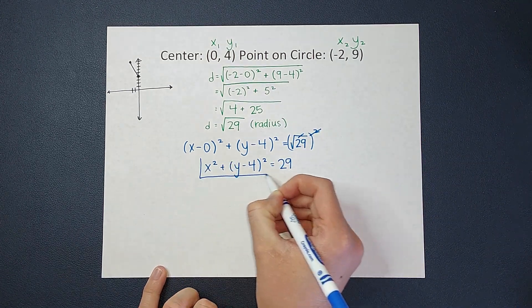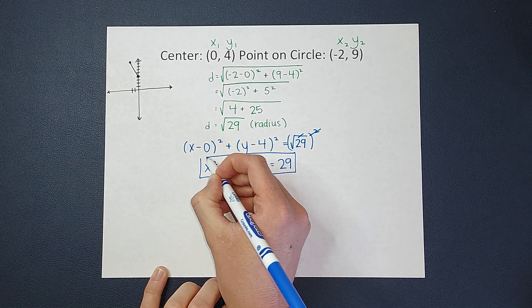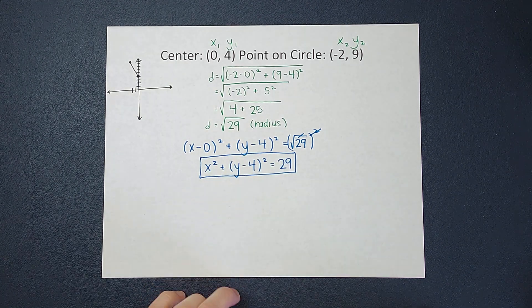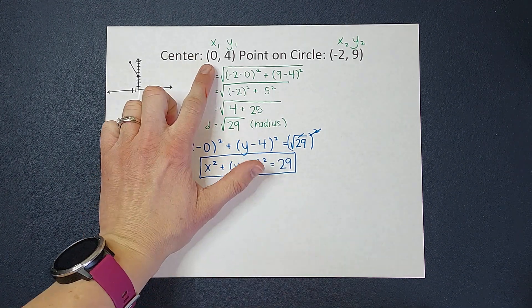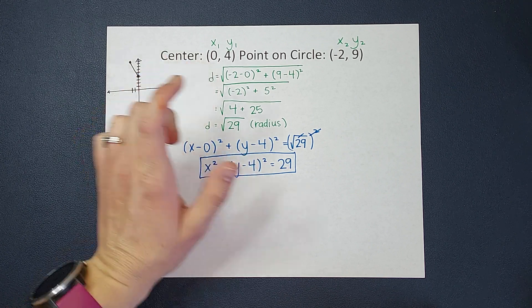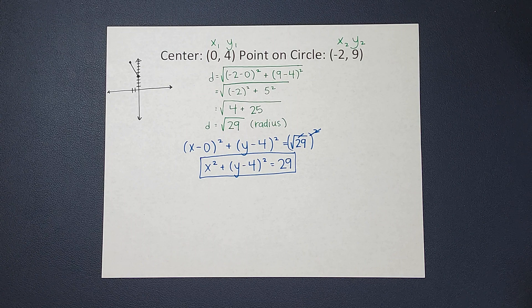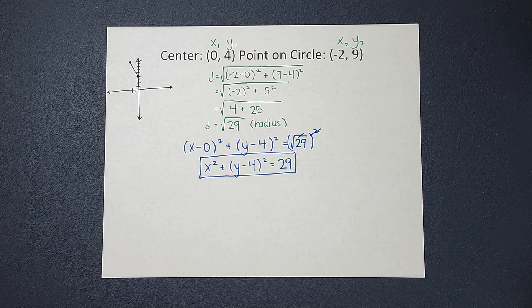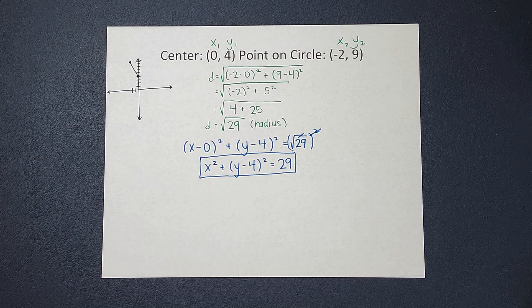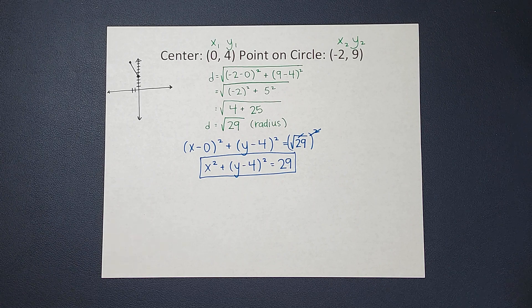So that, my friends, is the equation of a circle whose center is at (0, 4) and goes through the point (-2, 9). Hopefully this made sense. If you need some more circle videos, I will link a playlist for you. Bye!